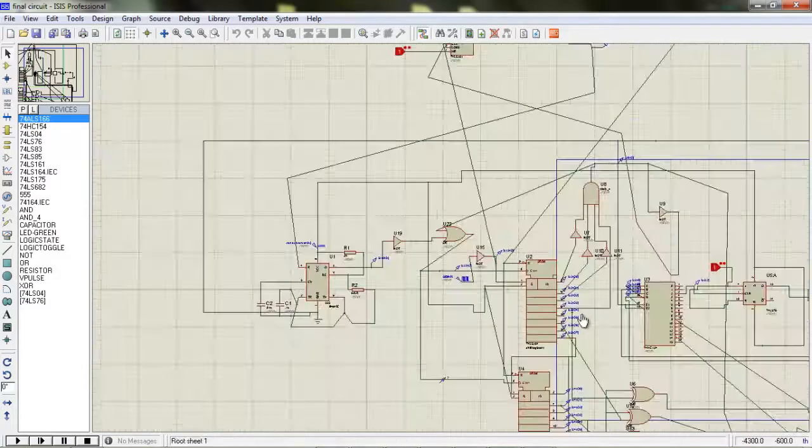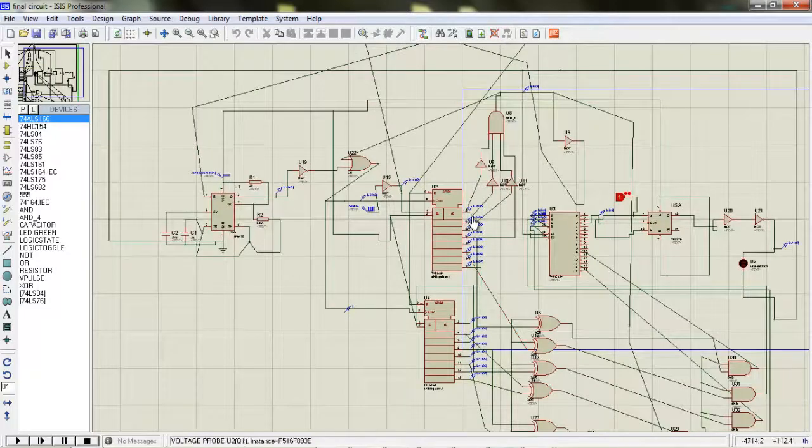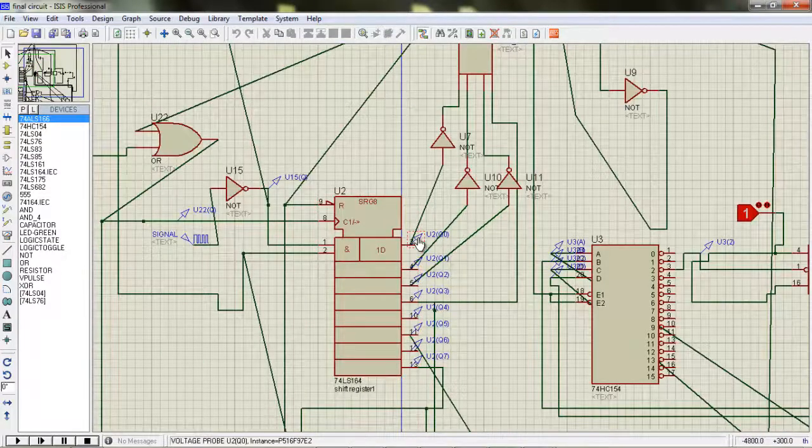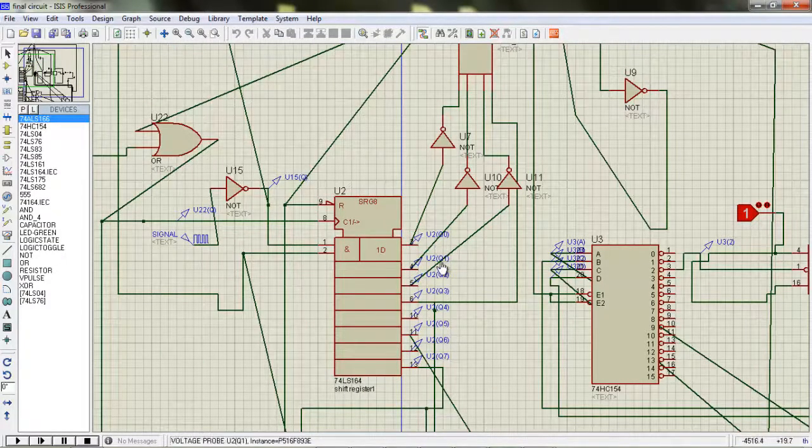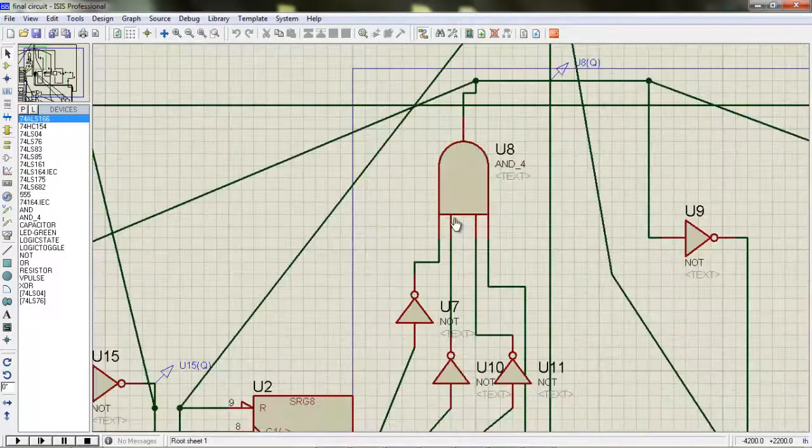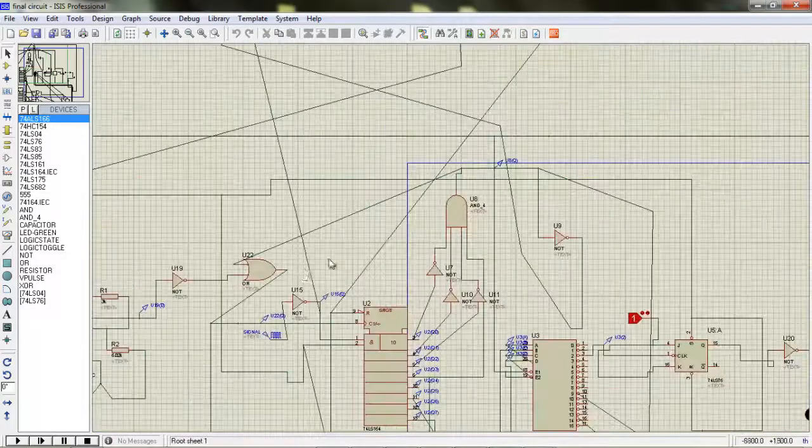The signal is now passing to the shift register and the value is stored at this point. At the time when we get 3 low and 1 high at this 4-port, then our AND gate becomes 1.